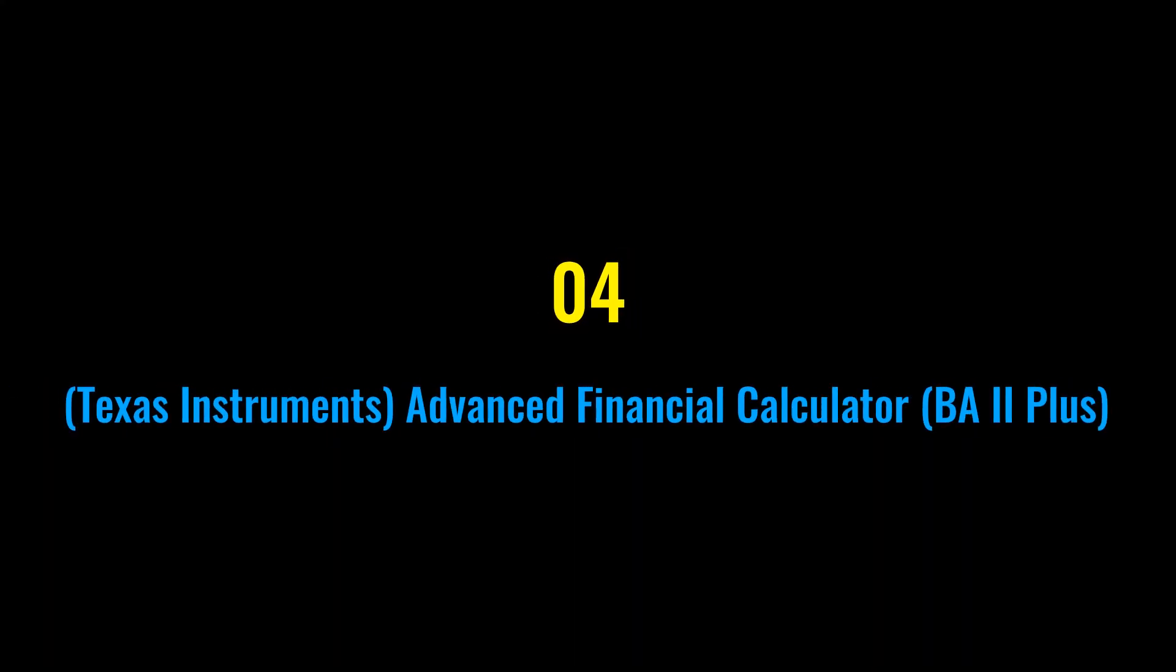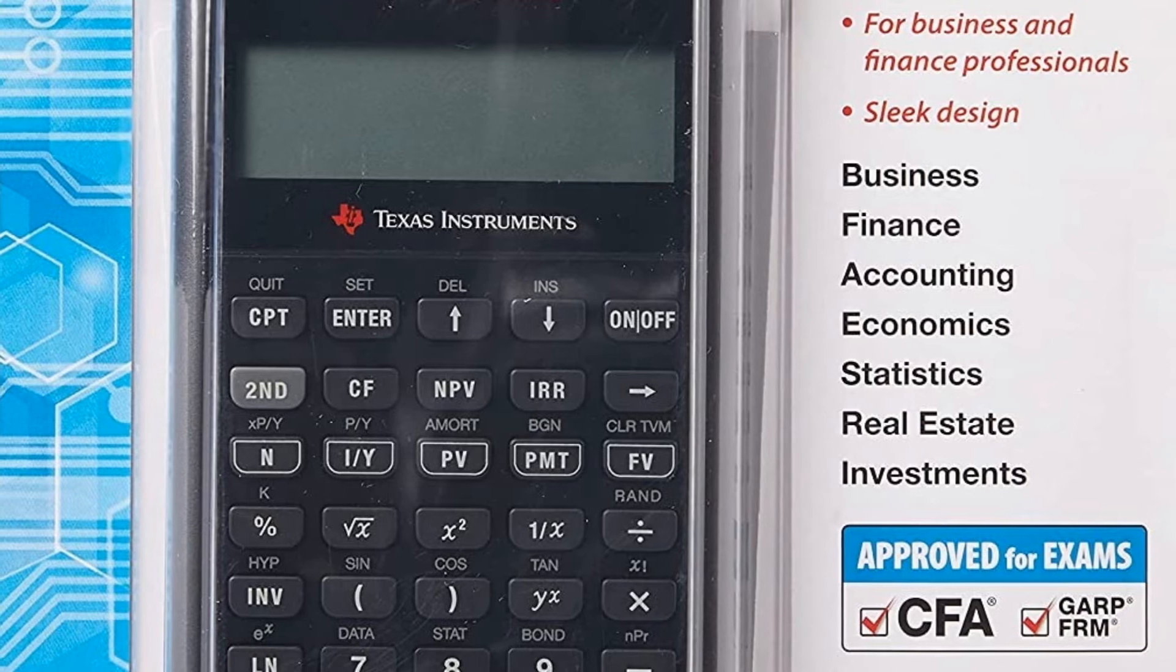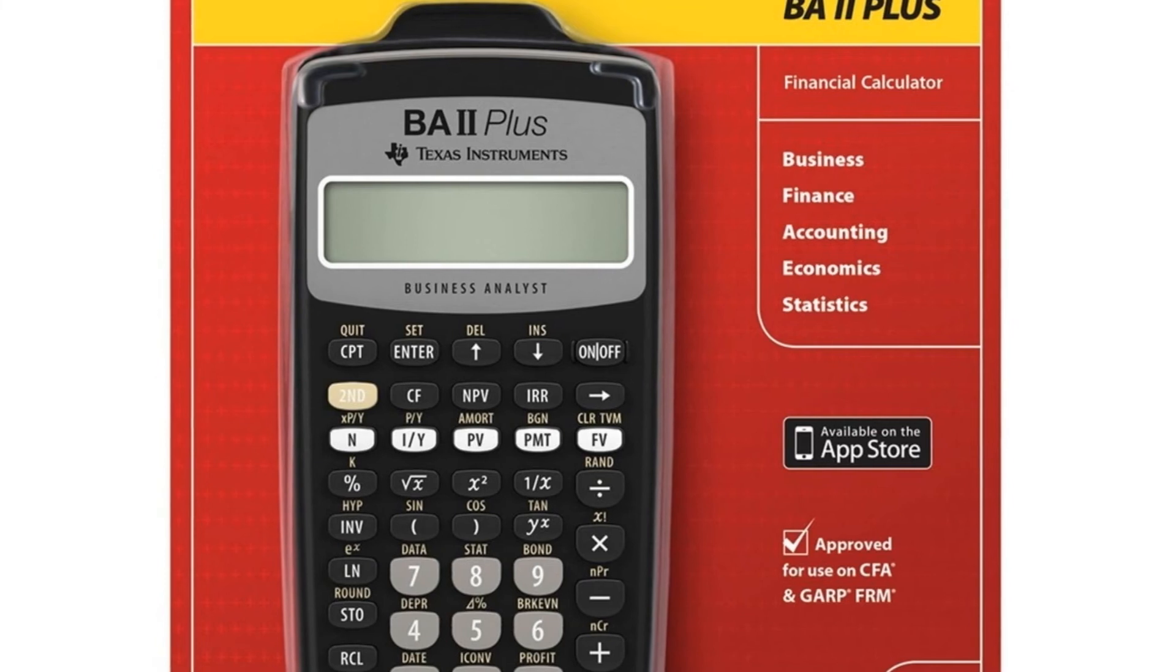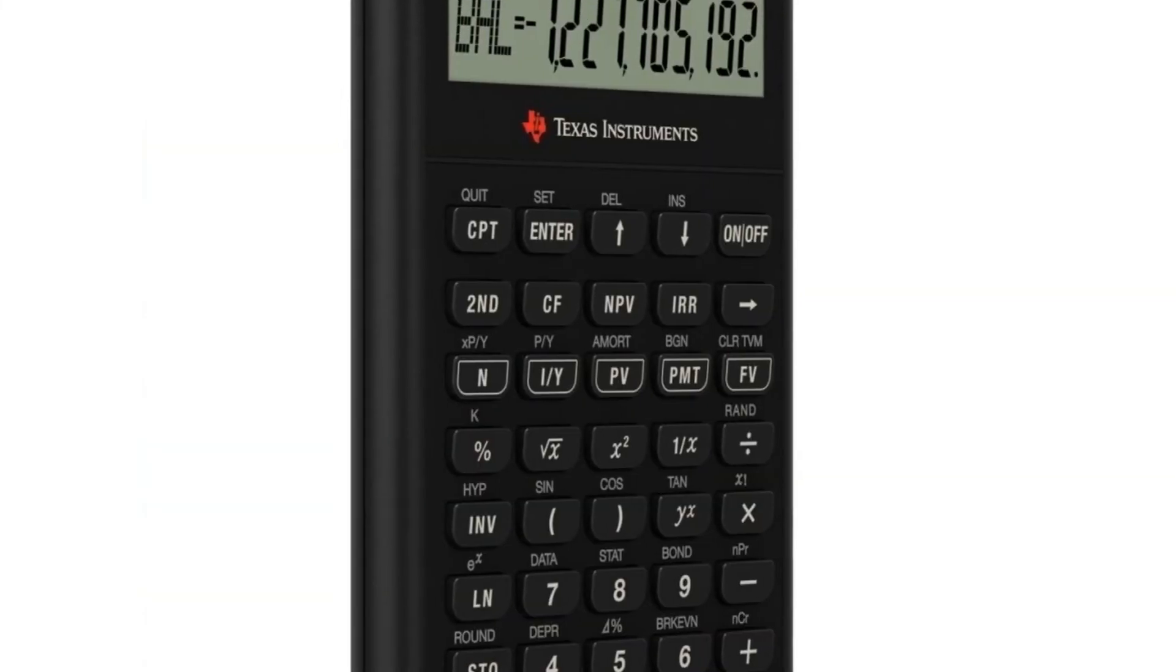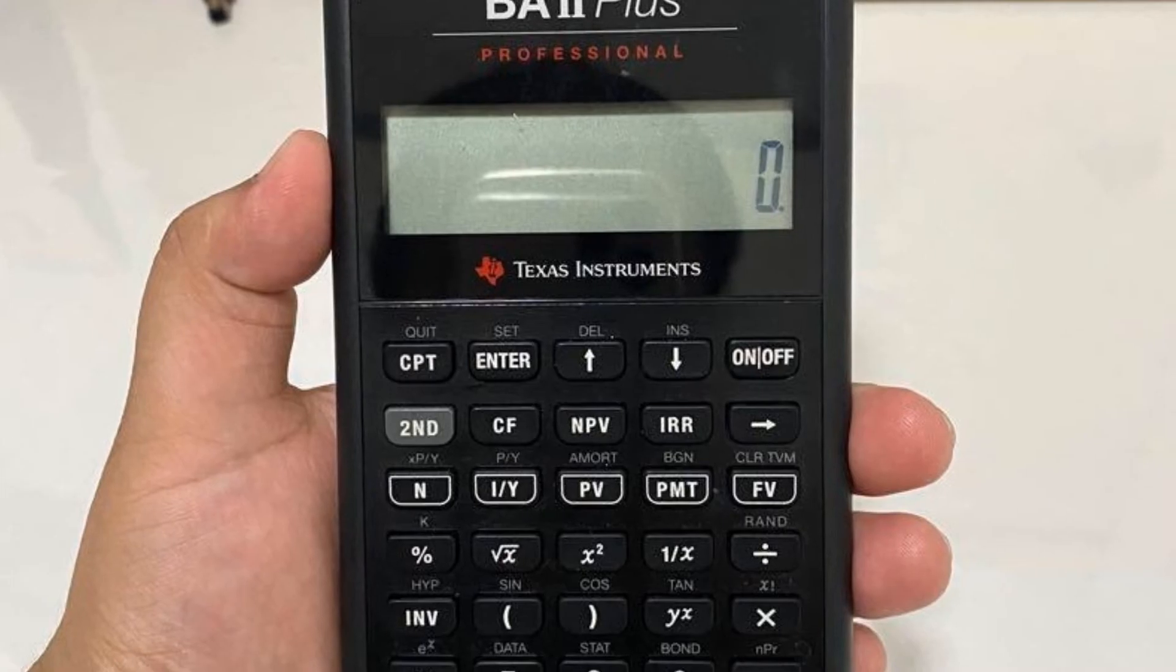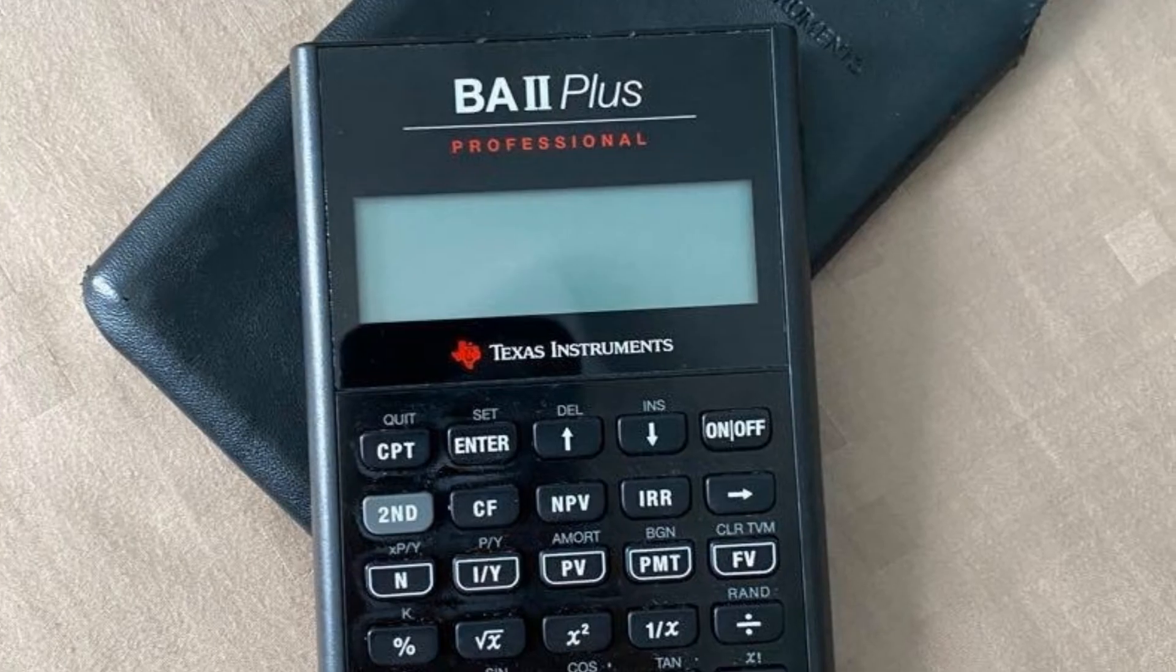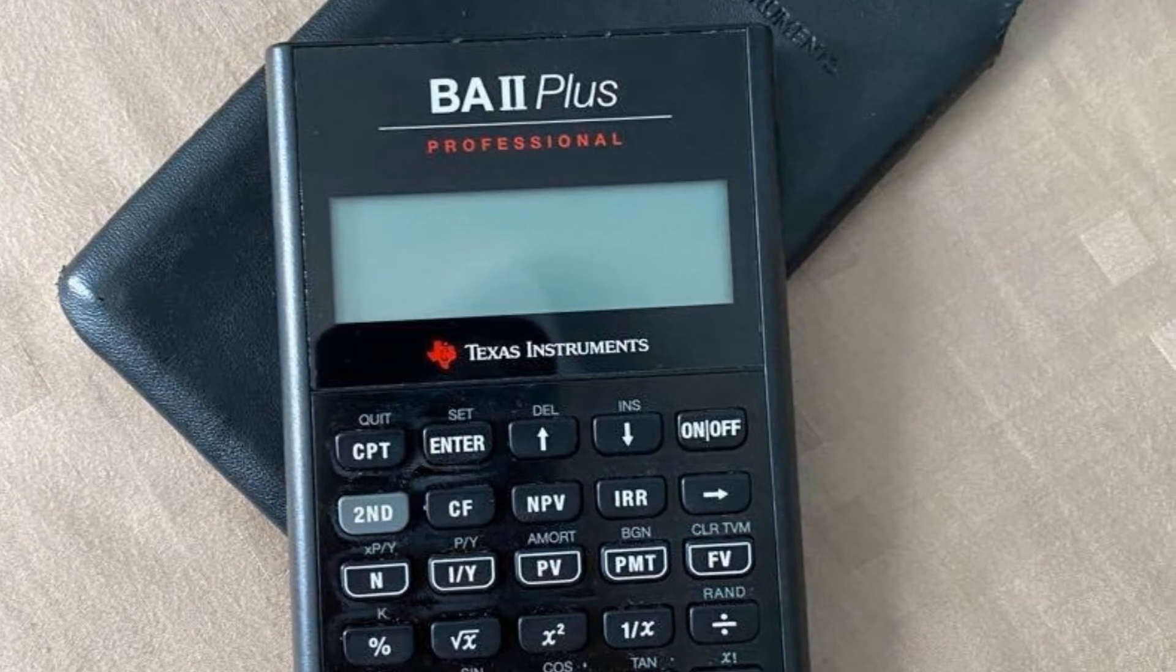Number four: Texas Instruments Advanced Financial Calculator BA2 Plus. Features: solves time value of money calculations such as annuities, mortgages, leases, savings, and more. Generates amortization schedules. Performs cash flow analysis for up to 24 uneven cash flows with up to four-digit frequencies. Computes NPV and IRR. One or two variable statistics with four regression options: linear, logarithmic, exponential, and power.